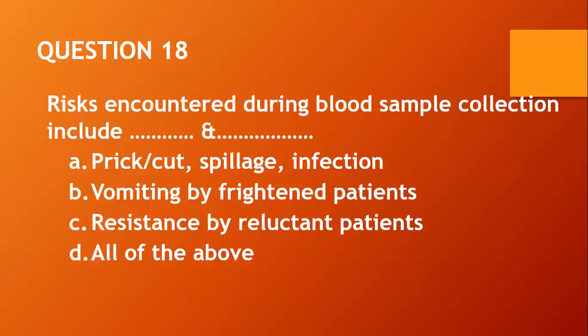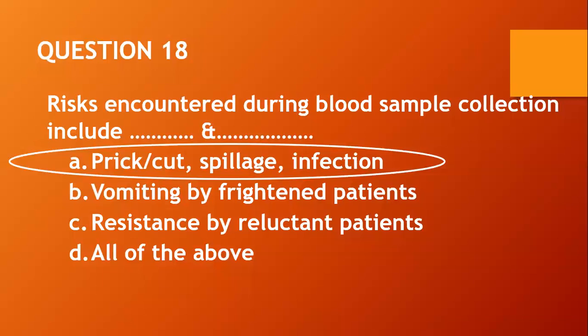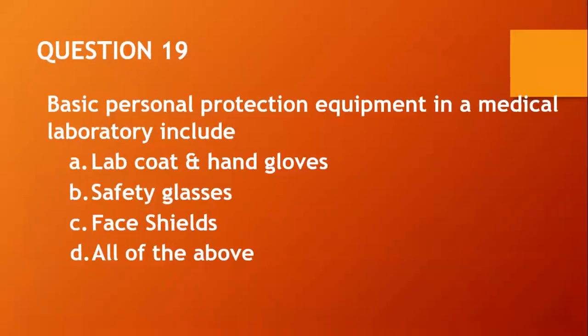Question eighteen: Risks encountered during blood sample collections include: A, pricks, cuts, spillage and infections; B, vomiting by frightened patients; C, resistance by uncooperative patients; D, all of the above. The answer is A: pricks, cuts, spillage and infections. Question nineteen: Basic personal protection equipment in a medical laboratory includes: A, lab coats and hand gloves; B, safety glasses; C, face shields; D, all of the above. All of the above are PPE used in the lab.